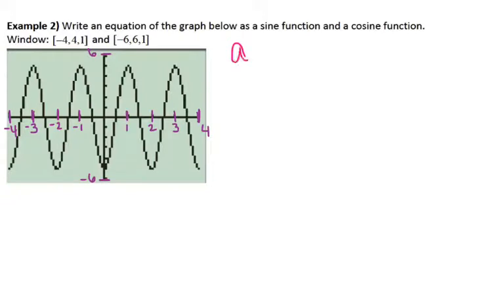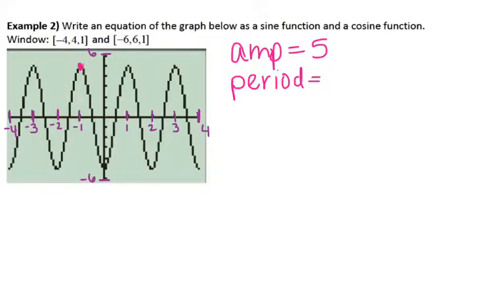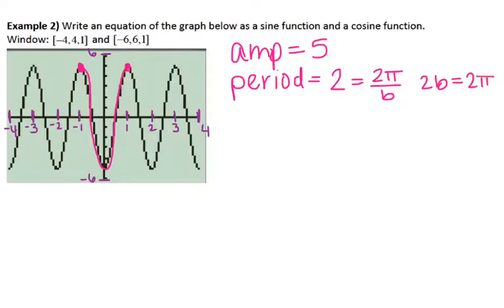The amplitude is how high or low the graph goes — the graph goes up to 5, so the amplitude is 5. For the period, we find the length of one full cycle. I'll find a full cycle of cosine since all the peaks are at nice values — this peak is at negative 1 and the next at positive 1. So the period is 2 units. Using 2 = 2π/b, cross multiplying gives 2b = 2π, so b = π.